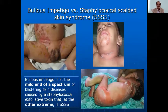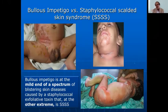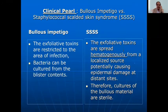You have to differentiate between bullous impetigo and its extension, staphylococcal scalded skin syndrome (SSSS). In bullous impetigo the exfoliative toxins are restricted to the area of infection and bacteria can be cultured from the blister content. In SSSS, you cannot culture organisms from the bulla — they are sterile — because it is the toxin causing the disease rather than the organism itself.